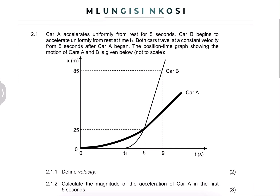So we've got car A, which accelerates uniformly from rest for five seconds, and then car B begins to accelerate uniformly from rest. What we need to be mindful of is that both cars are actually accelerating from rest. Both cars travel at a constant velocity from five seconds after car A began. The position versus time graph showing the motion of cars A and B is given below — it is not drawn to scale.